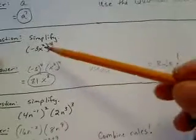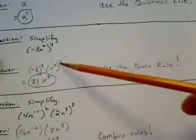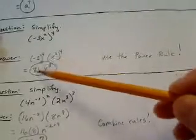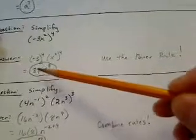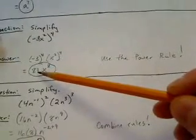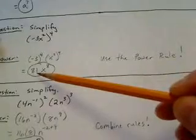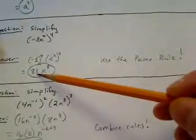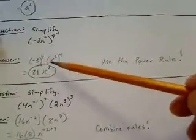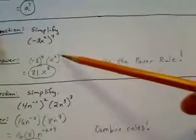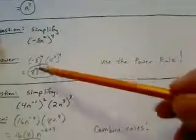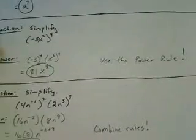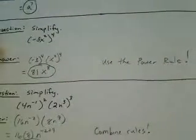And then we take x squared raised to the 4th power. Negative 3 times negative 3 times negative 3 times negative 3 is 81 positive, because negative times negative times negative times negative becomes positive. And then we have x raised to the 2 times 4, which is 8. So the final answer is 81x to the 8th power. That's using the power rule.